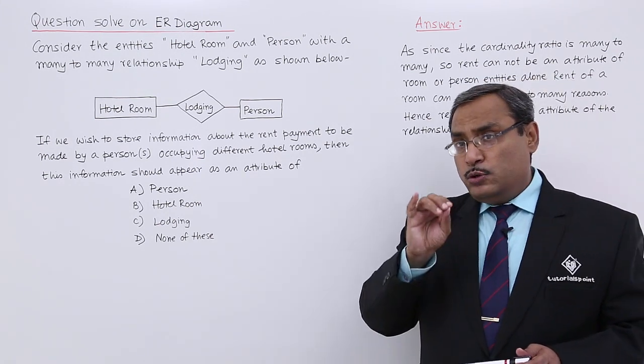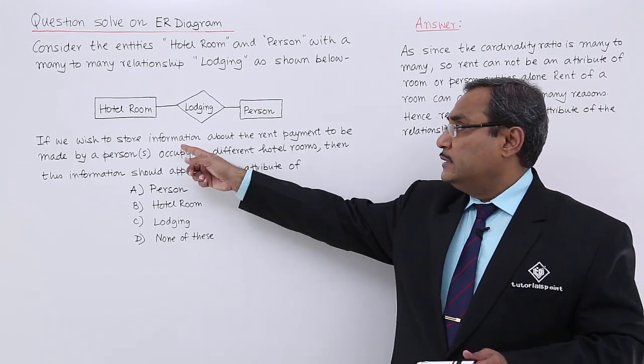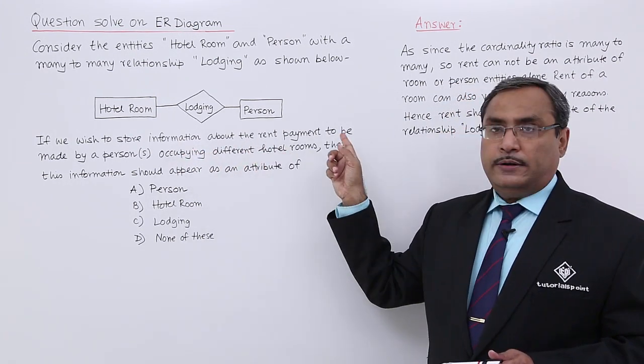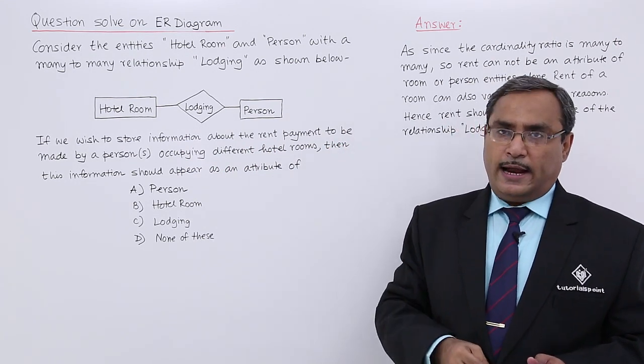That means we want to incorporate an additional attribute regarding the rent payment. So where should this attribute be added?